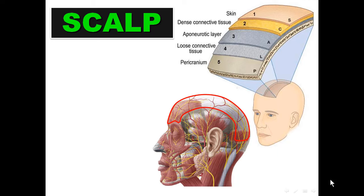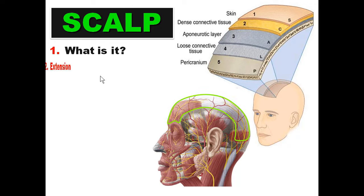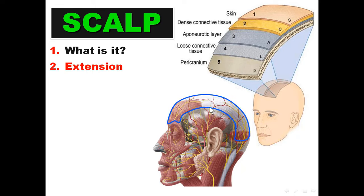Good morning, this is Dr. Adel Bandok, Professor of Anatomy and Neuroscience, Mansoura University, Egypt. Today I will talk about the scalp. The scalp is the soft tissue covering the vault of the skull. It extends from the eyebrows anteriorly to the superior nuchal line and the external occipital protuberance posteriorly, and from one superior temporal line to the other superior temporal line.